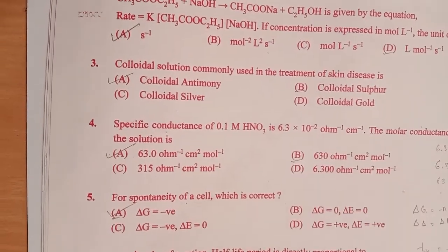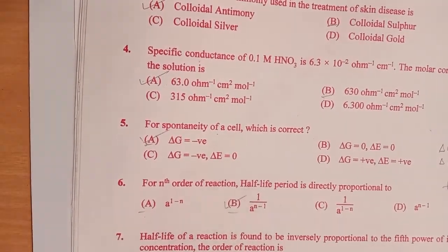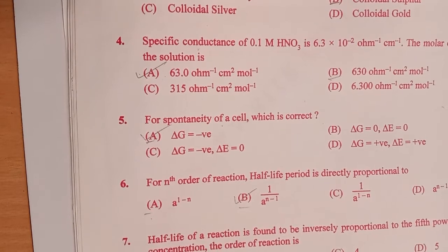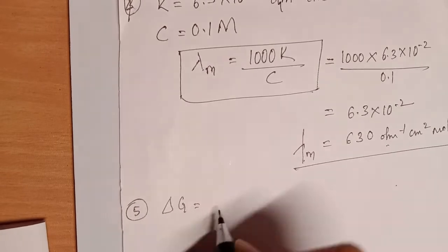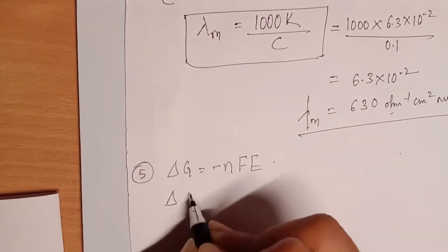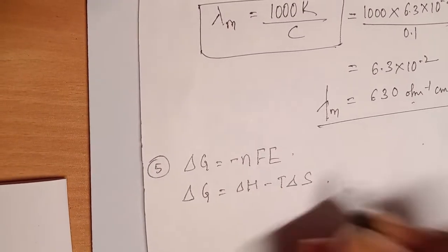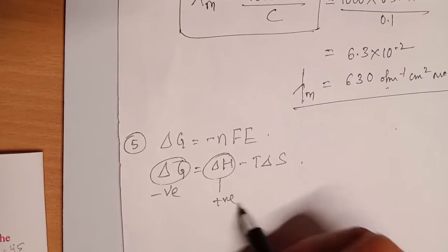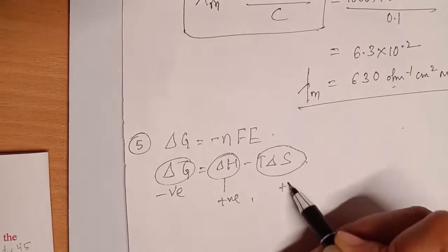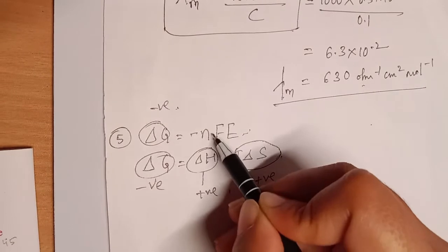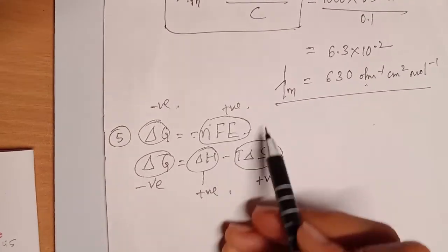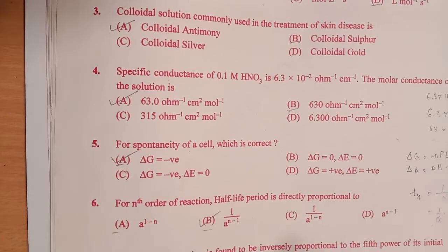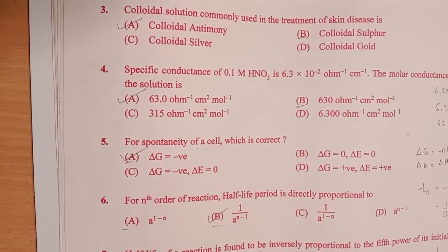Fifth question: for spontaneity of a cell, which is correct? For a spontaneous reaction, the Gibbs energy ΔG is always negative. The formula is ΔG equals minus nFE, and also ΔG equals ΔH minus TΔS. For spontaneity, ΔG is negative, which means the nFE term is positive and the cell potential is positive. Matching all these conditions to the options, the only correct option is A: ΔG is negative.